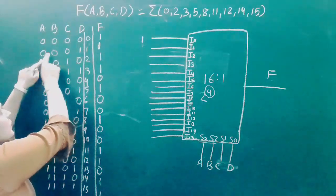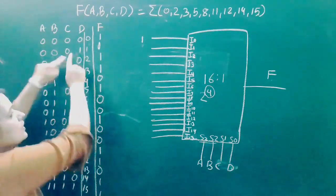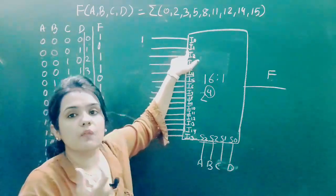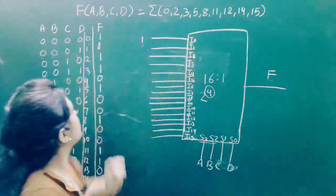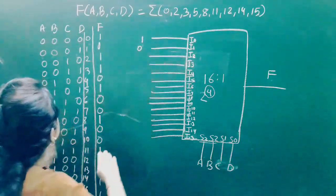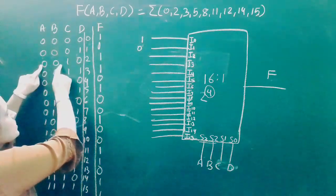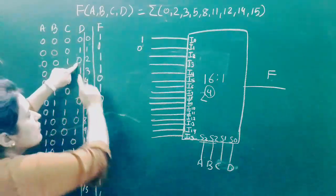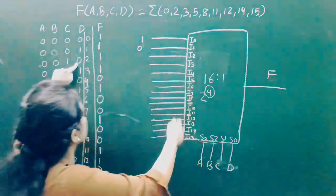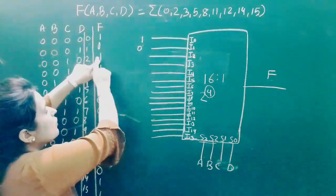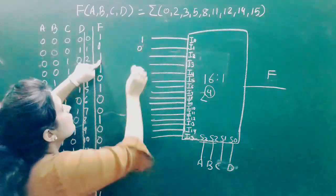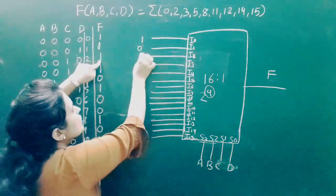When A, B, C, D = 0, 0, 0, 1, I1 is selected. We want F = 0, so we connect 0 to I1. When A, B, C, D = 0, 0, 1, 0, I2 is selected. Since F = 1 at min term 2, we connect 1 to I2. Similarly, we complete all other connections.